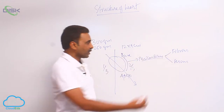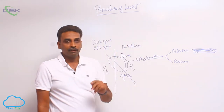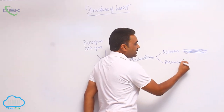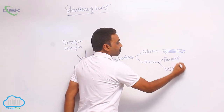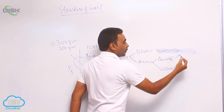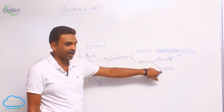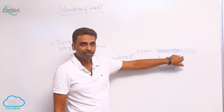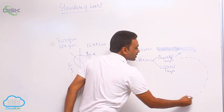The fibrous pericardium is made up of fibrous tissue. The serous pericardium is made up of two layers: the parietal layer and the visceral layer. The parietal layer fuses with the fibrous layer, and the visceral layer becomes the outermost layer of the heart.